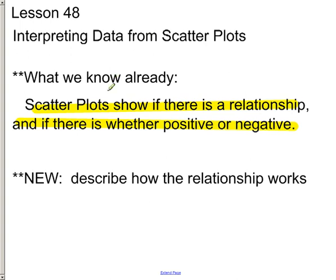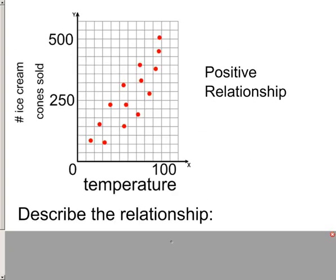But at the same time, it could also show us that there's no relationship. But the new part that we're going to go to is, how can we say something other than no relationship, positive relationship, or negative relationship? And so let's take a look at this right here.